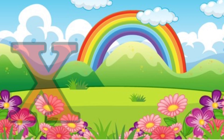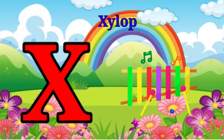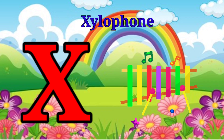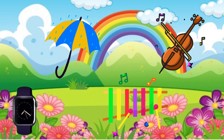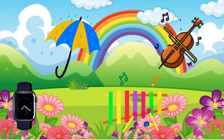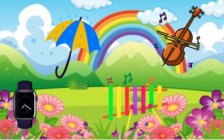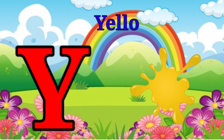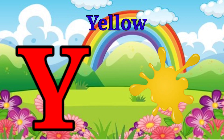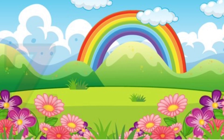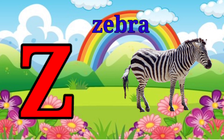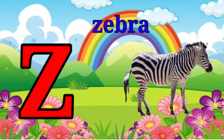X is for xylophone, z-z-z-xylophone. Y is for yellow, ye-ye-yellow. Z is for zebra, z-z-zebra.